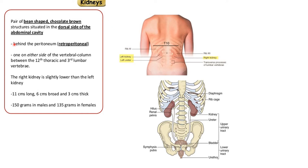Kidneys are bean-shaped organs situated on the dorsal side of the abdominal cavity, posteriorly behind the peritoneum — hence they are retroperitoneal, meaning there is only an anterior covering. They are located one on either side of the vertebral column between the 12th thoracic and 3rd lumbar vertebra. The right kidney is slightly lower than the left due to the presence of the liver. Each kidney is 11 cm long, 6 cm broad, 3 cm thick, and weighs about 150 grams in males and 135 grams in females.